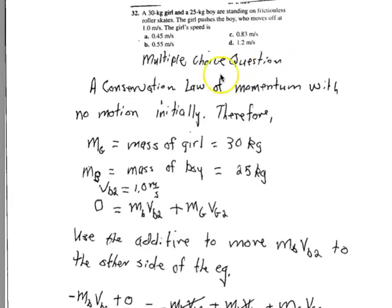So what is the girl's speed after this collision has occurred? So once again, the conservation law of momentum allows us to handle this problem. There's no motion initially. I'll come to that again in a moment, but I write down the mass of the girl, 30 kilograms, mass of the boy, 25 kilograms. The final speed of the boy is 1 meter per second. But now since there's nothing moving initially, we're going to have zero on the left hand side.